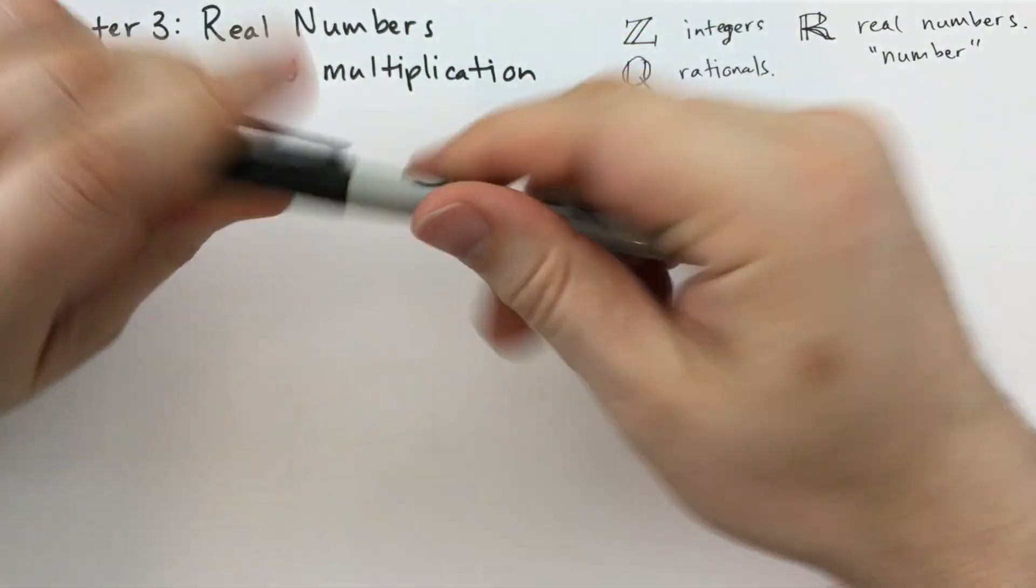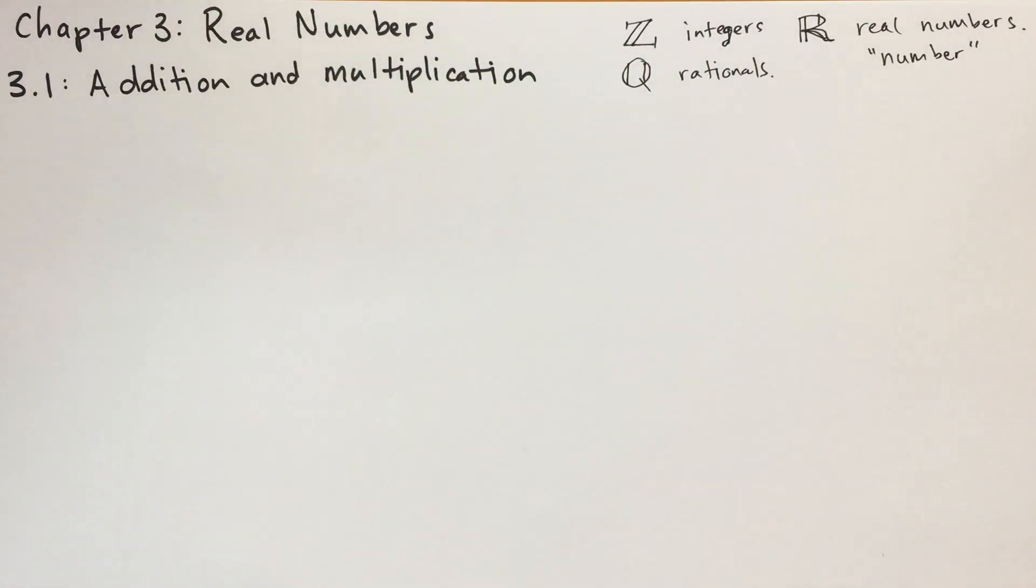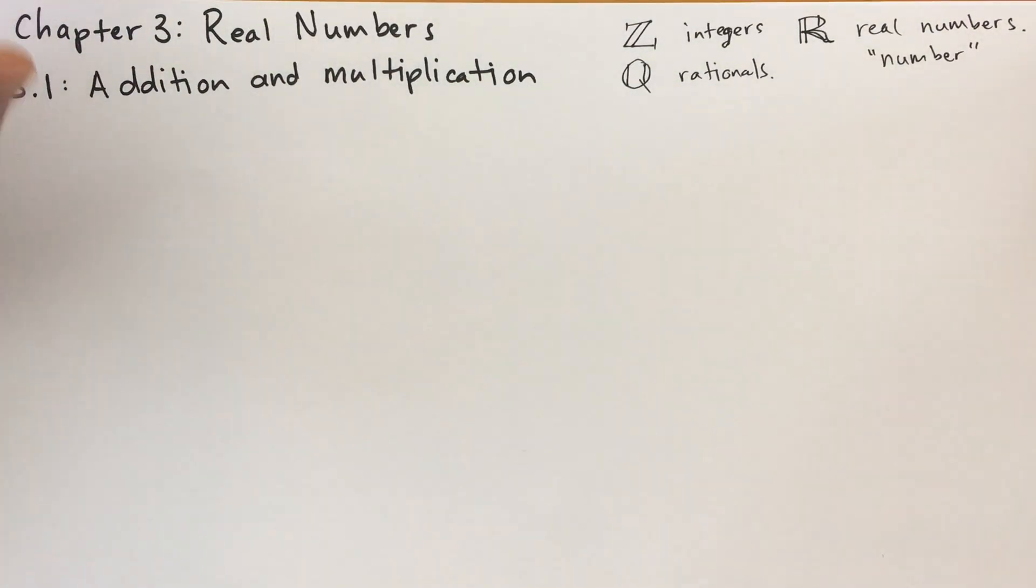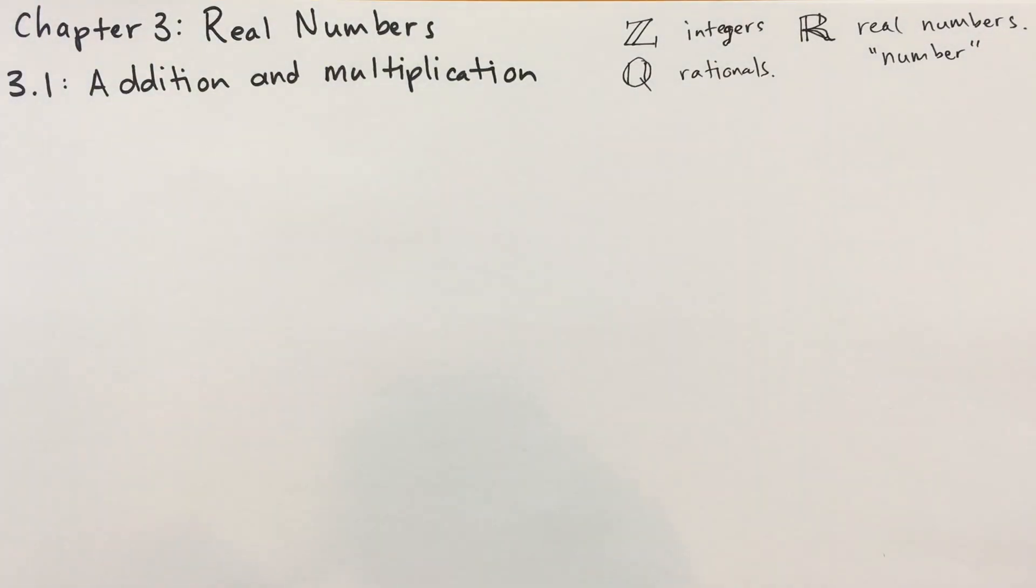Now what do we mean by real number? Well, the word real is just a word. It doesn't have anything to do with reality, or the cosmos, or the nature of the universe, or anything like that. It's just a set of numbers that are all related to each other. You can go from one to the other by addition or multiplication with another real number. And so it has special properties. Let's talk about those properties.